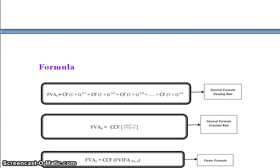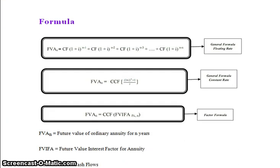The general floating rate formula is: FVAN = CCF × (1+i)^(n−1) + CCF × (1+i)^(n−2) + CCF × (1+i)^(n−3) + … + CCF × (1+i)^(n−n). The constant rate formula simplifies this to: FVAN = CCF × [(1+i)^n − 1] / i.